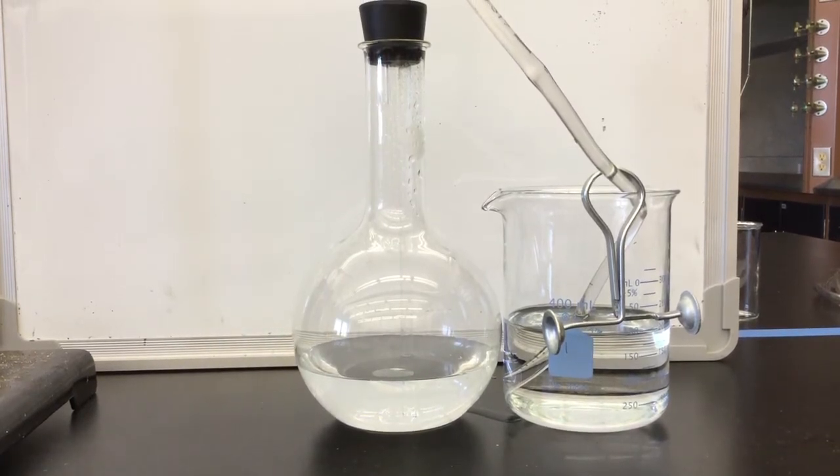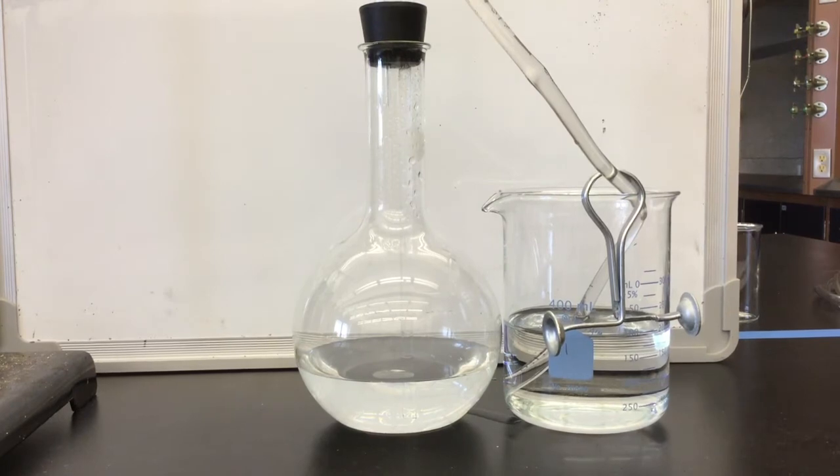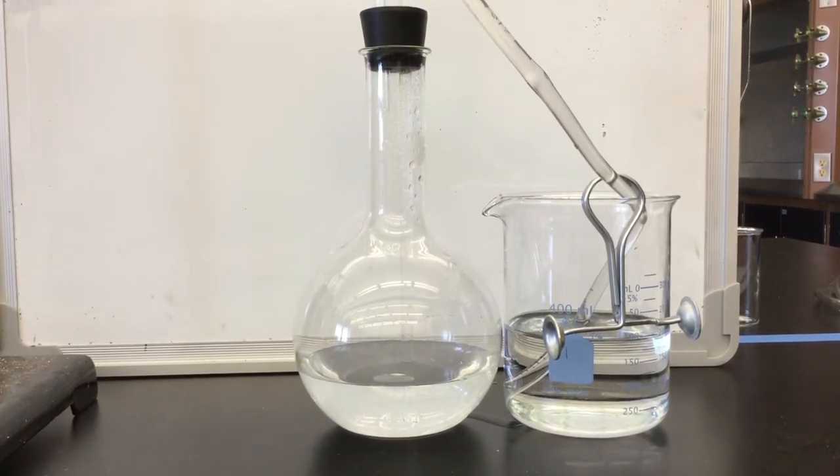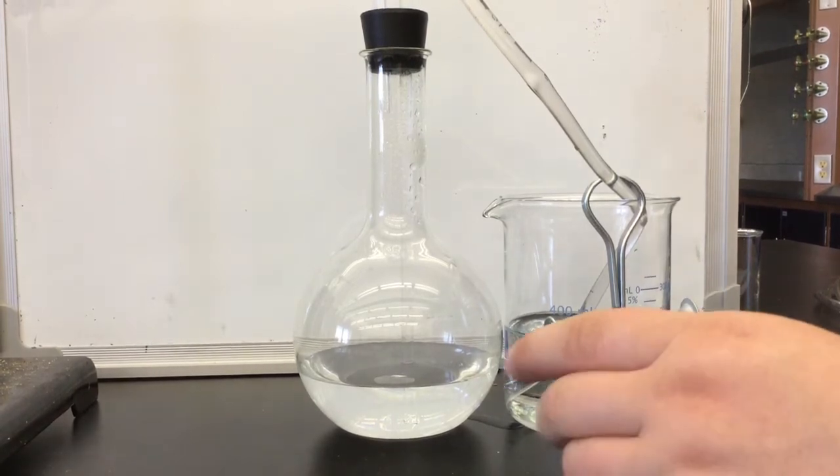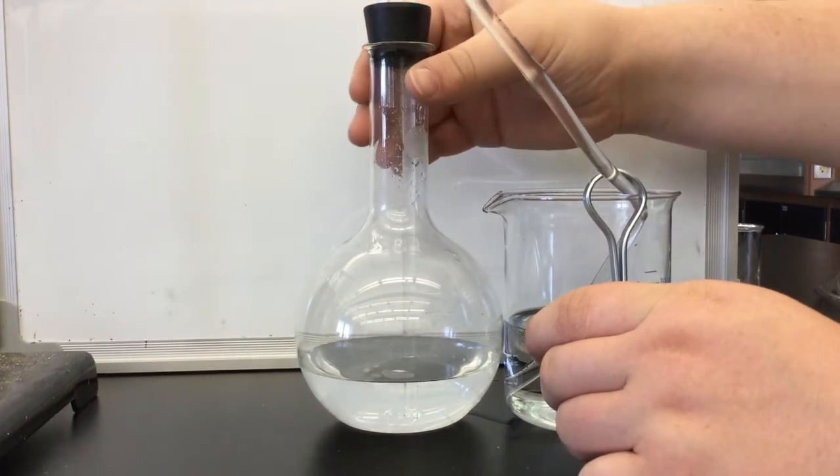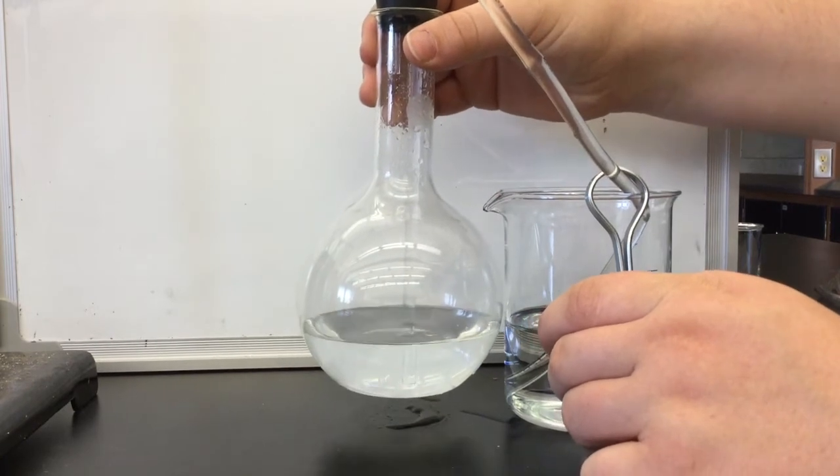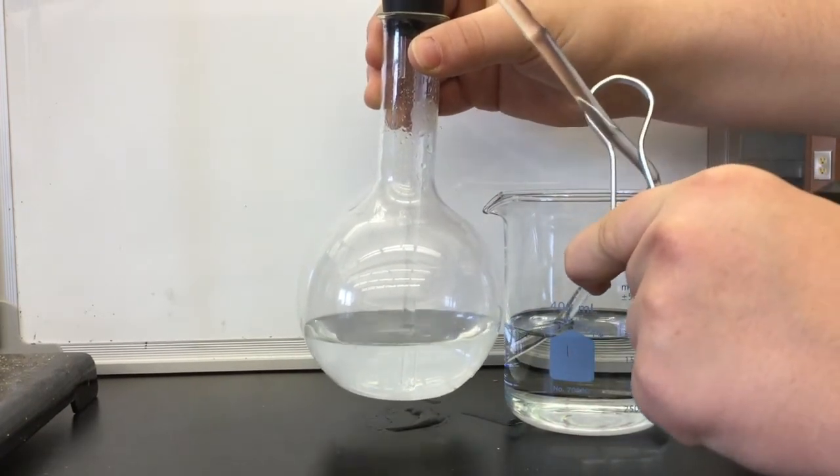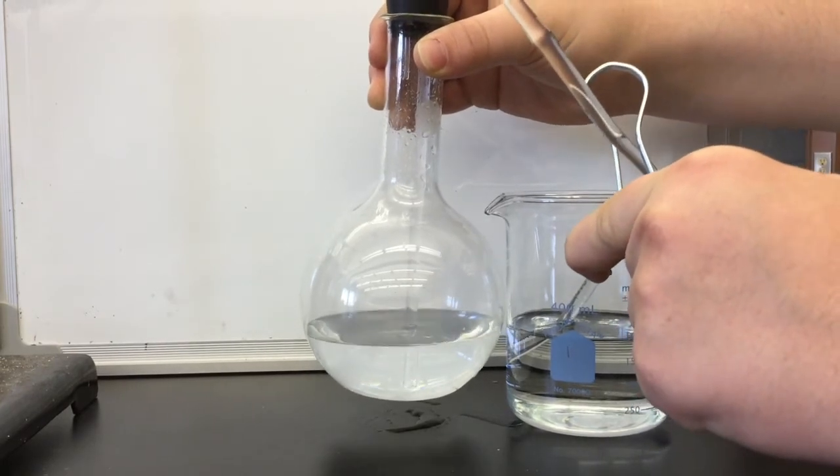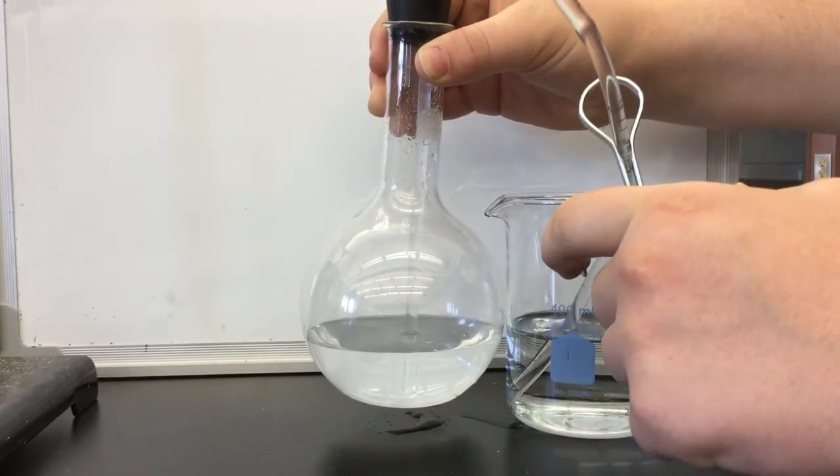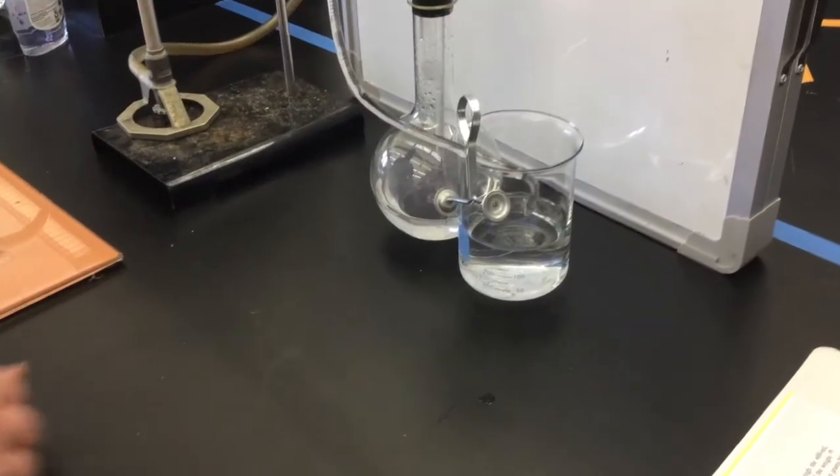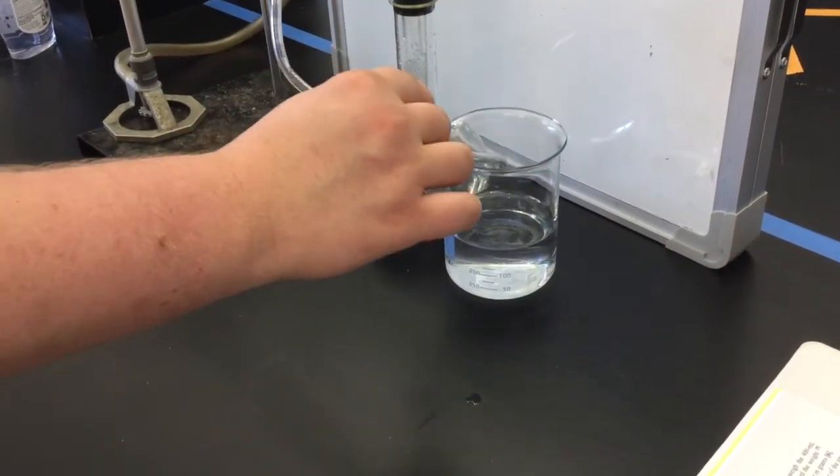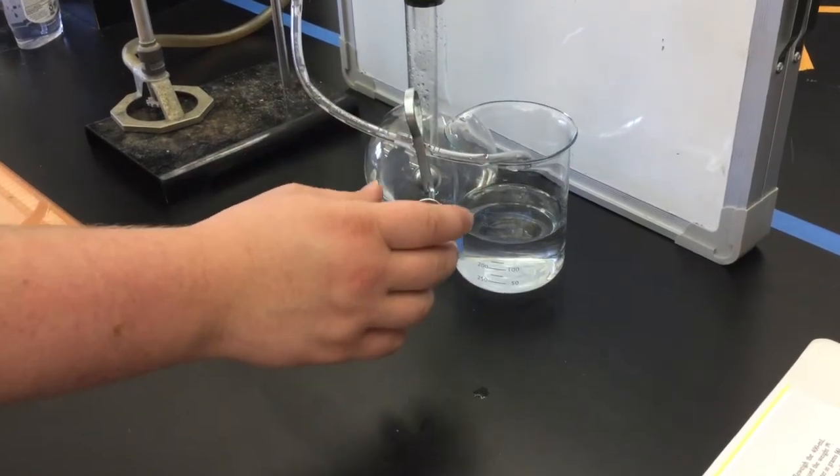You'll notice that again the water levels are not quite the same, so you're going to need to raise and lower either the beaker or the flask until the water levels are the same, and then secure the pinch clamp. Again, it may be helpful to use a book or some other object to keep the flask or beaker at the appropriate height. Remove the tubing from the beaker, and then we will re-weigh the beaker and record the mass to determine how much water is in.